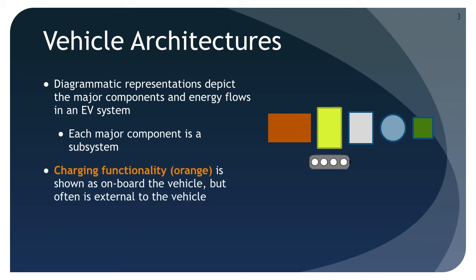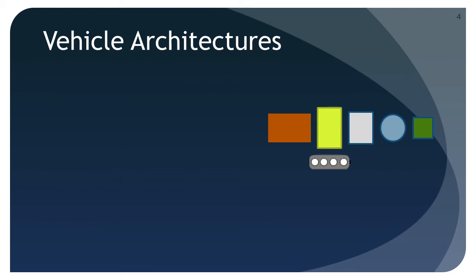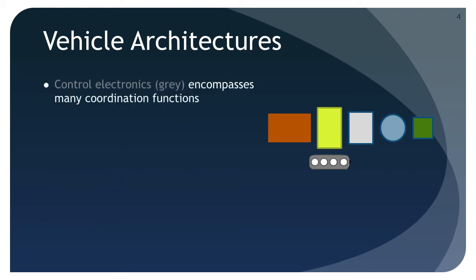Charging functionality, always shown in orange, is depicted as if it were on board the vehicle, but often the battery charger is external to the vehicle. The battery component, shown in yellow, varies dramatically in capacity and in structure. Control electronics, always shown in gray, encompasses a broad array of functions that include power conditioning, motor control, and the control of regenerative braking.